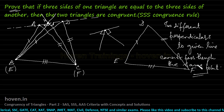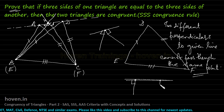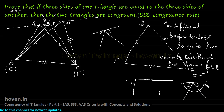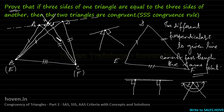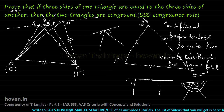Two different perpendiculars to a given line cannot pass through the same point — this is a known geometrical fact. Two different perpendiculars at the same point on a line would make the angle greater than 180 degrees: 90 for one, 90 for the other, plus the remaining space. This basic contradiction proves that A and D cannot be separate. Therefore triangle ABC must be congruent to triangle DEF, proving the SSS congruency rule.